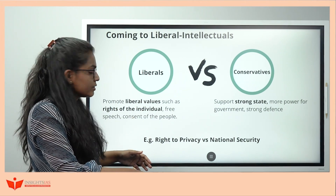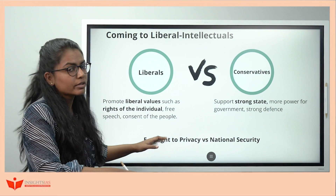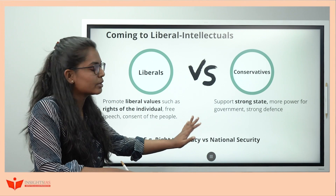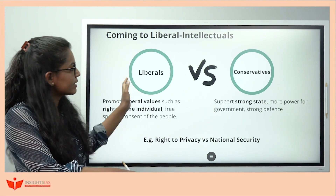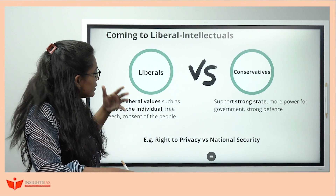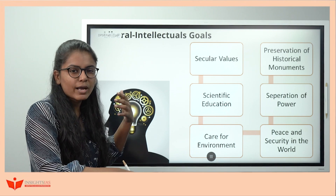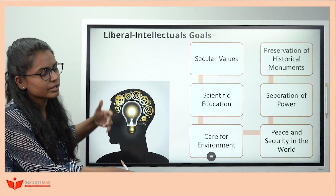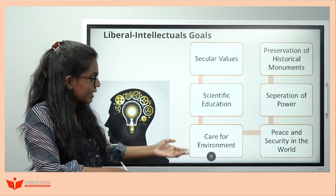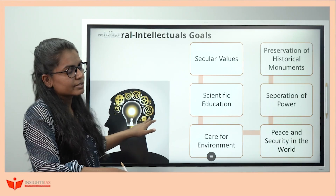For example, take right to privacy versus national security. Liberals want their right to privacy protected, while conservatives are willing to give up privacy for national security — that's the difference. An intellectual person has critical thinking. So the goals of a Liberal Intellectual include secular values, preservation of historical monuments, environment, scientific education, and peace and security. These goals map directly to the articles.